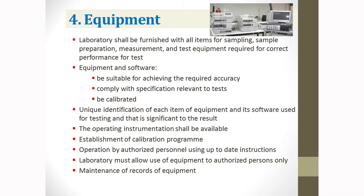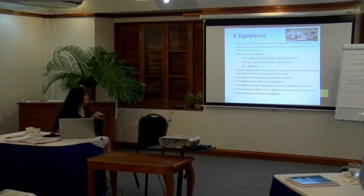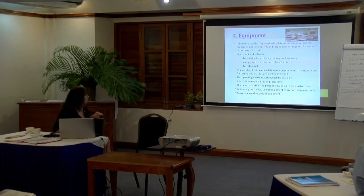For example, for heavy metals testing at low detection limits, you need a certain AAS with the appropriate detection system. You must comply with specifications relevant to the test, and equipment needs to be calibrated. ISO 17025 requires unique identification of each significant item of equipment and software. Operating instructions must be available, and you need to establish a calibration program.